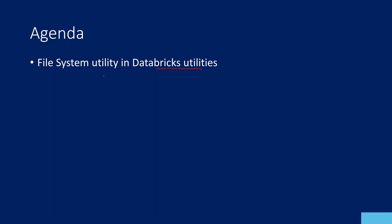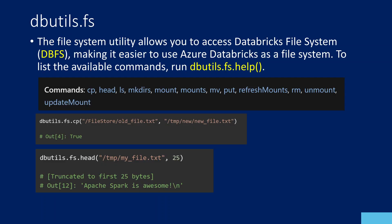This video is dedicated to File System Utilities in the Databricks Utilities. So let's do a quick recap. There is something called the DB Utilities module, and this module contains a lot of utilities. One of the utilities inside DB Utilities is the File System Utility, which we have seen in our past video.